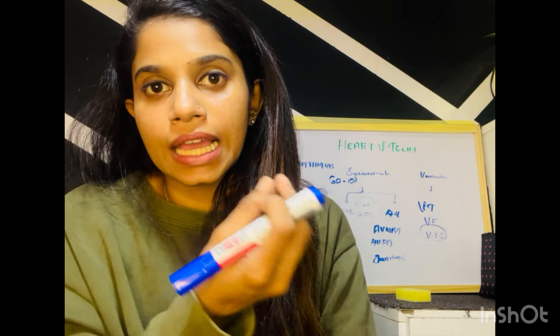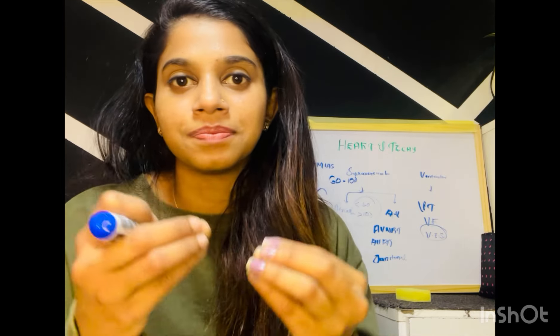When we take extrasystoles — we have a normal conduction system: SA node, AV node, AV junction, then His bundles, then Purkinje fibers. This is our normal conduction system. Only this electrical activity can be produced from this conduction system, and other cells do not normally have this property. But sometimes some cells will have increased automaticity and can produce electrical activity in the heart.